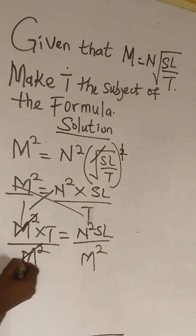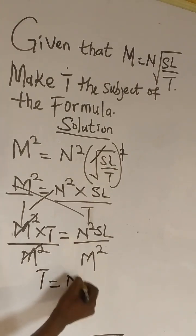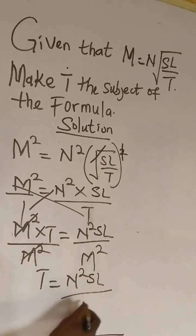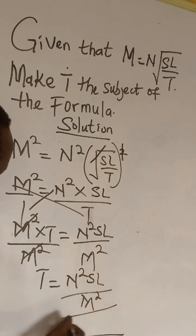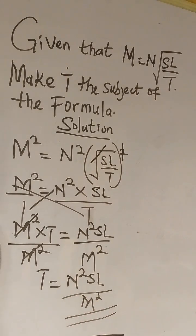M squared cancels M squared. We now have T equals N squared SL over M squared. This is our final answer.